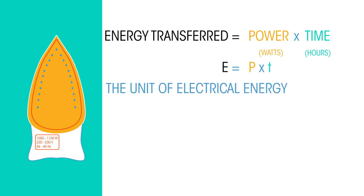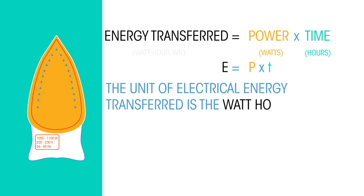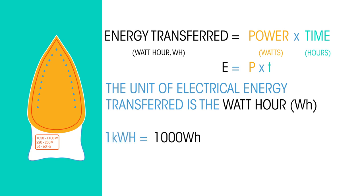The unit of electrical energy transferred is the watt hour (Wh). This is likely to be a very large number, so we usually express it in kilowatt hours, where one kilowatt hour is equal to a thousand watt hours.